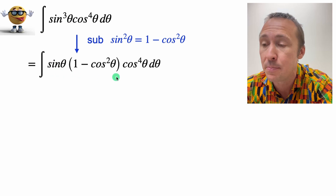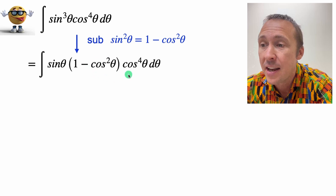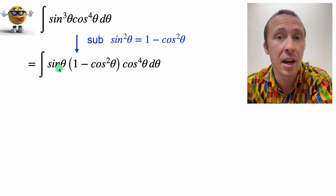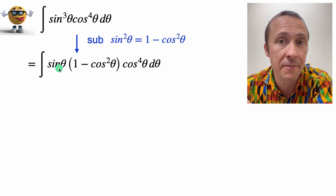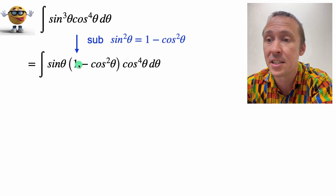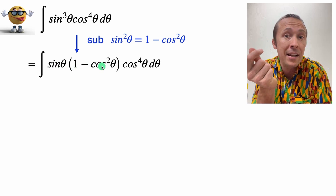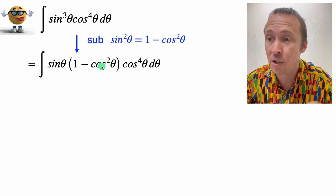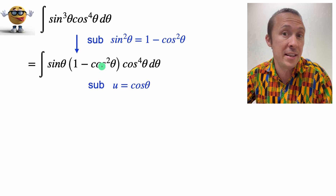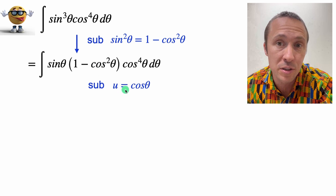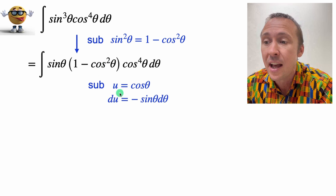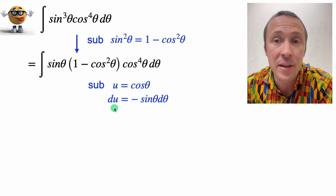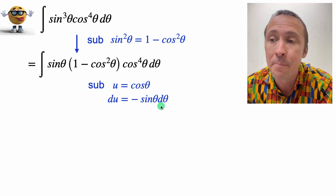The reason we did that is because now everything's in terms of cos theta. And every time you see a derivative of a function inside the integral, you automatically want to think substitution — can I do a substitution? And in this case, we can. So we'll set u equal to cos theta. Therefore, we'll take the derivative and get du equal to negative sine theta d theta.